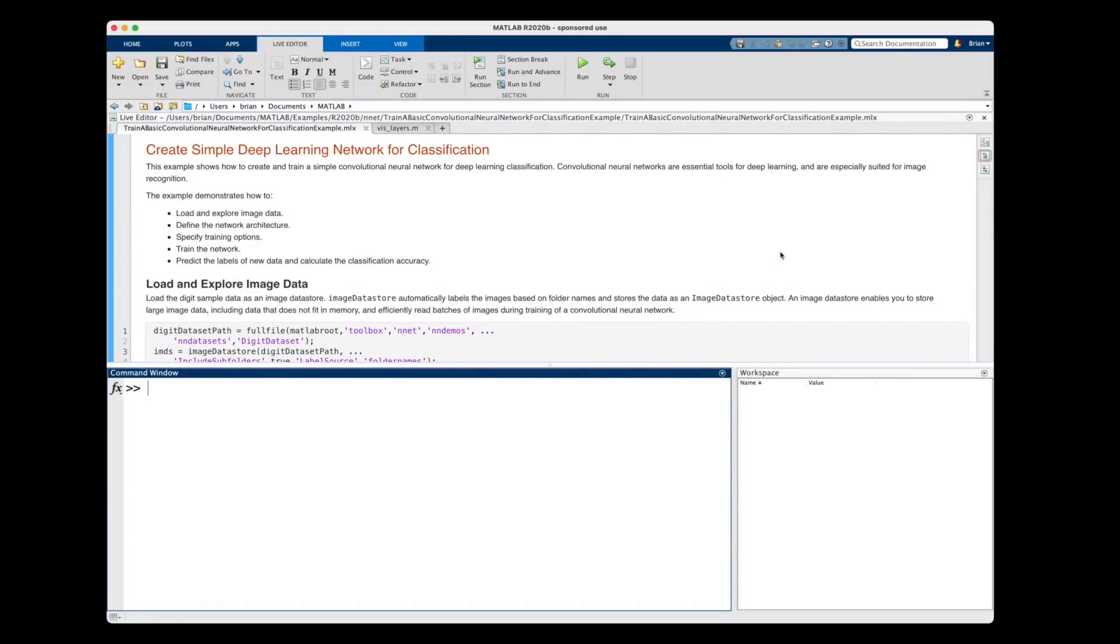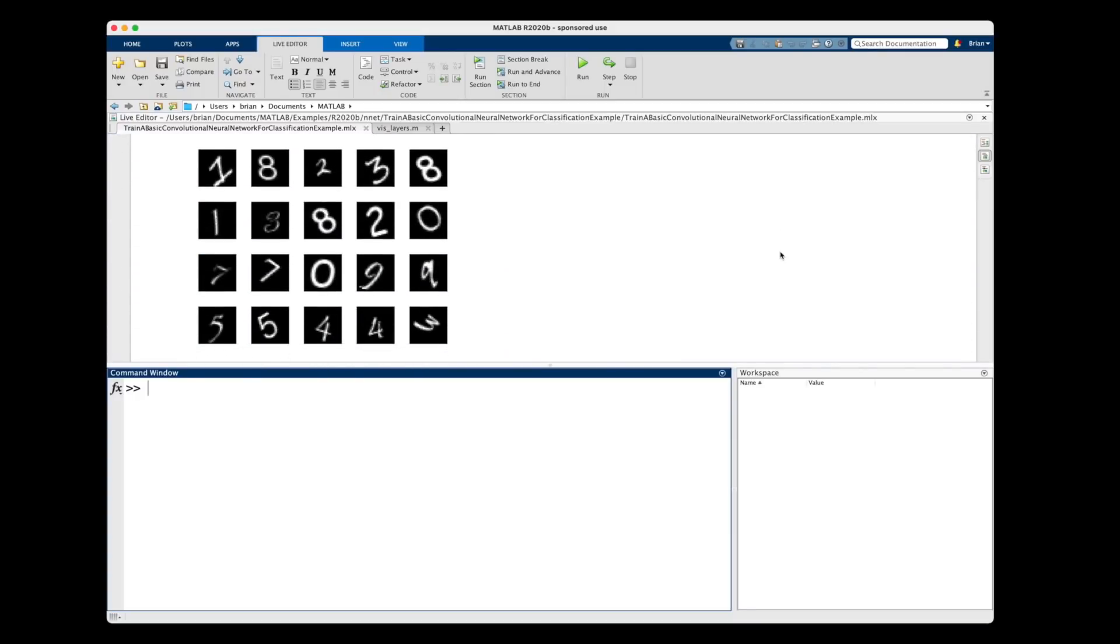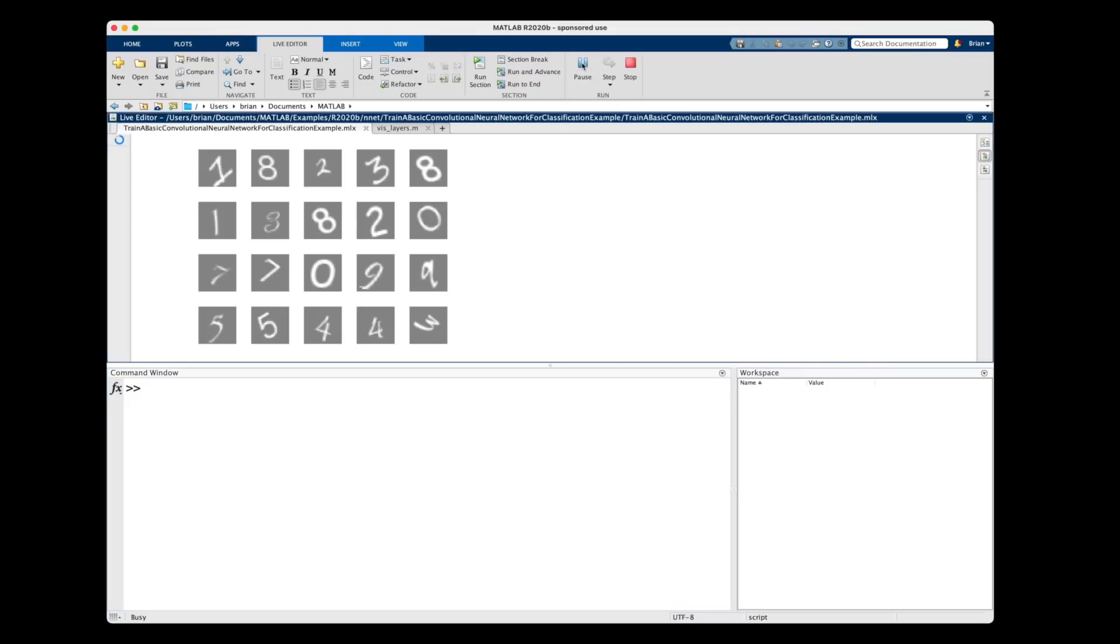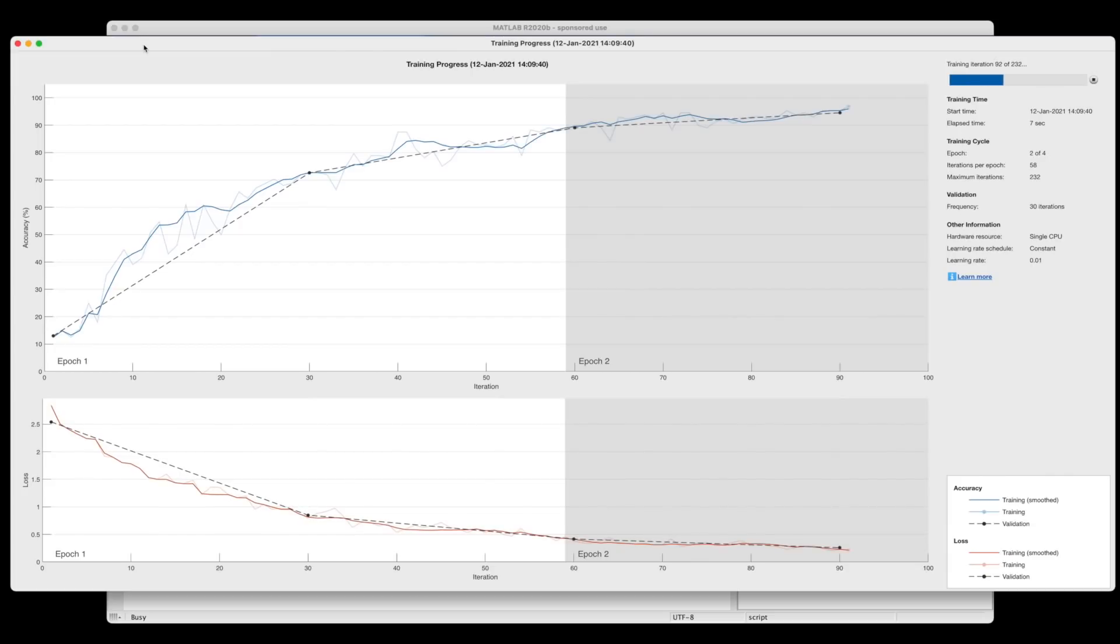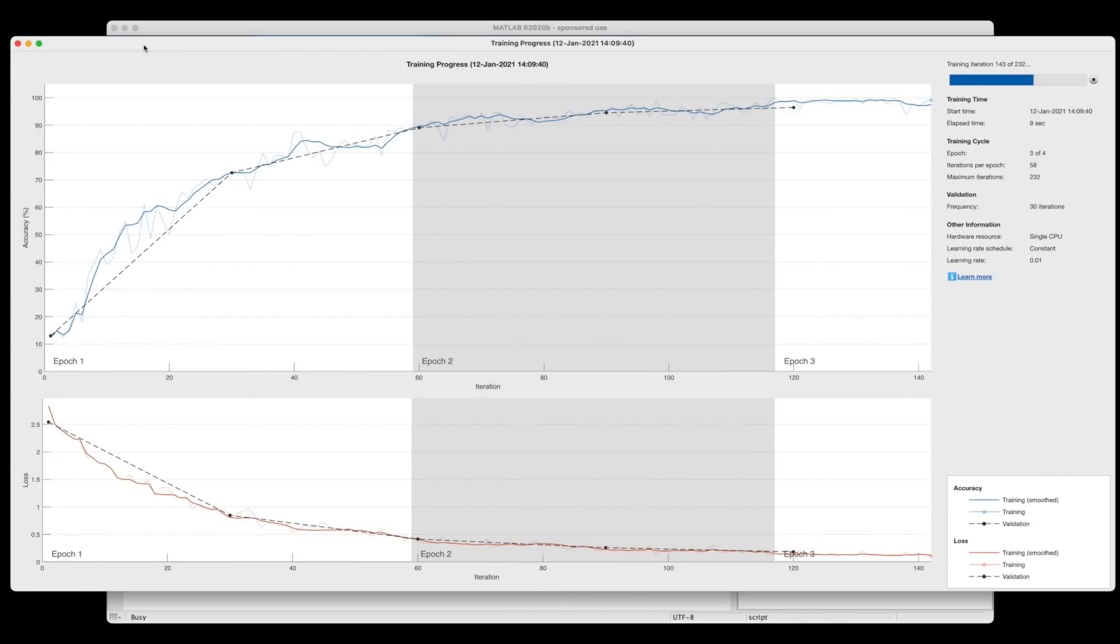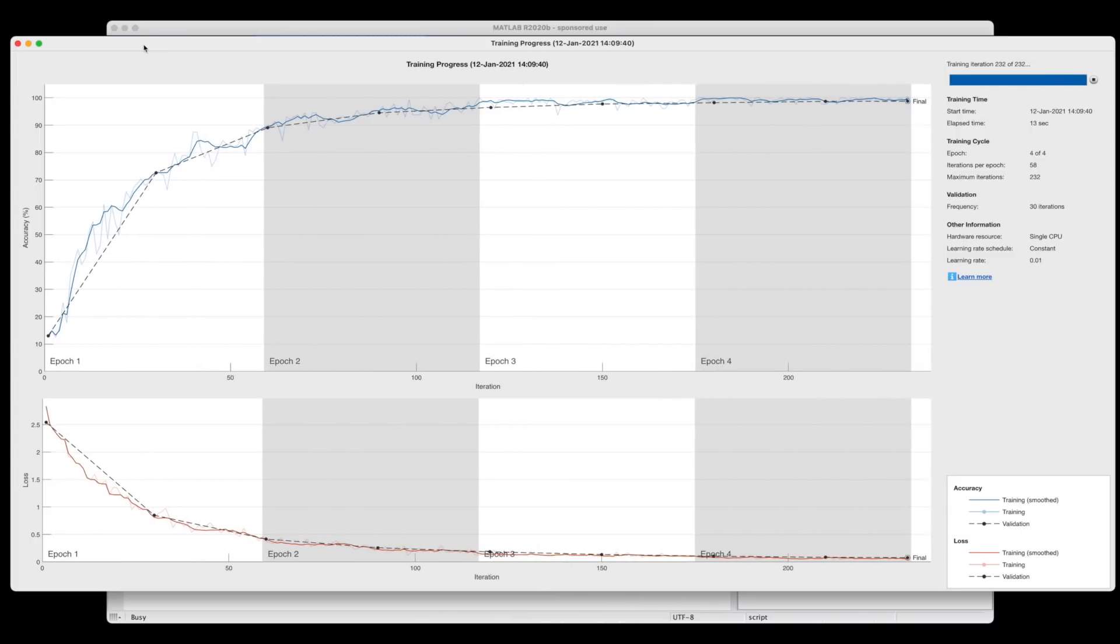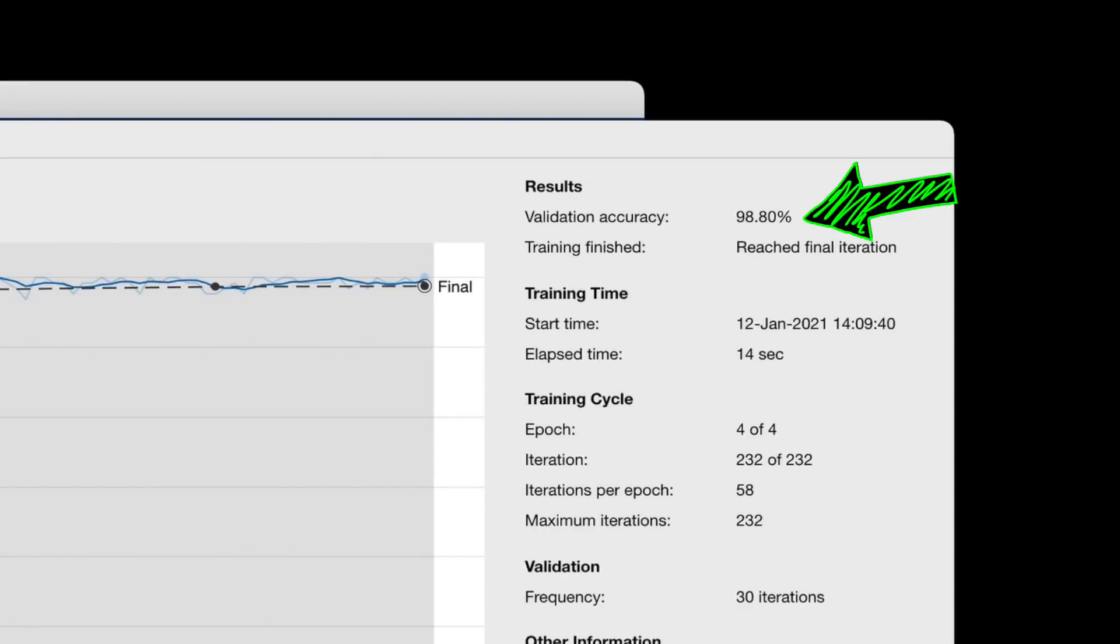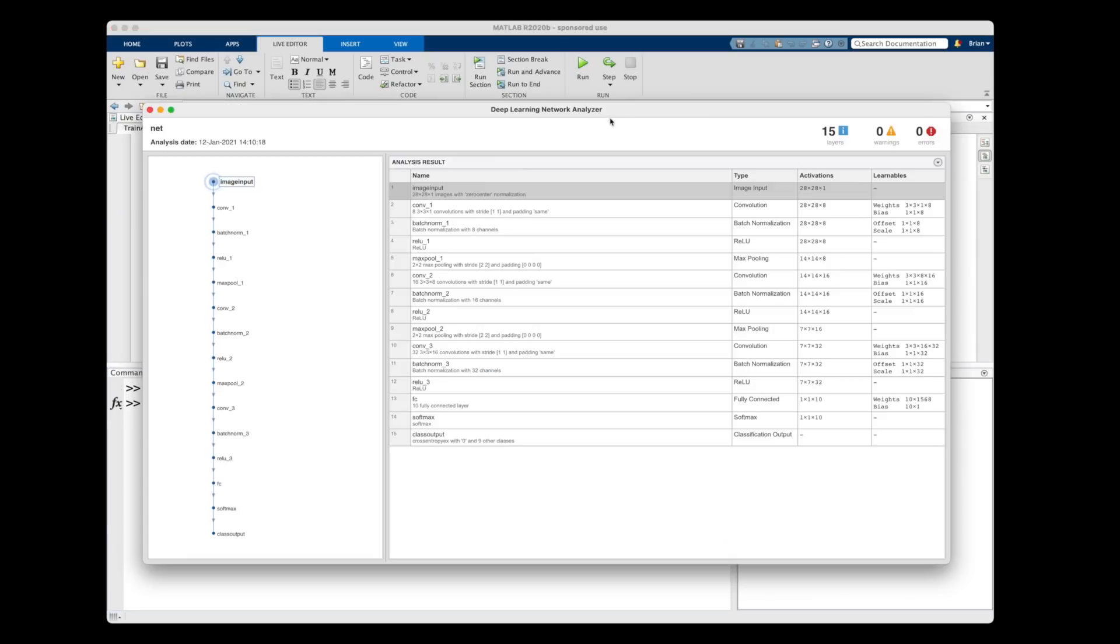To show you what I mean, let's run the MATLAB example called Create Simple Deep Learning Network for classification that ships with the Deep Learning Toolbox. This example trains a neural network to recognize handwritten numbers. And this example trains the network using 750 labeled images for each of the 10 numbers. It then uses 250 images for each number to verify the accuracy of the network, which we can see here is about 99% accurate. So, not too bad.